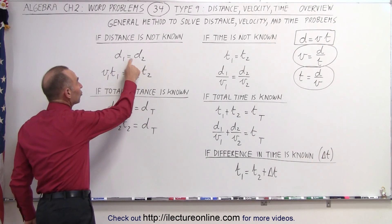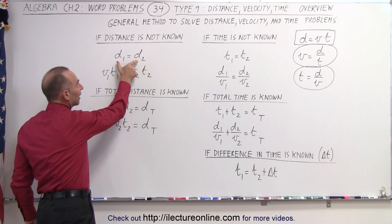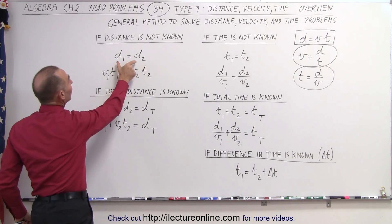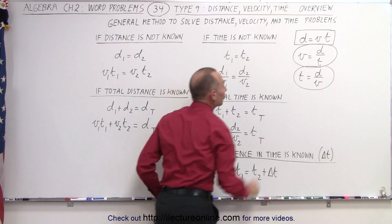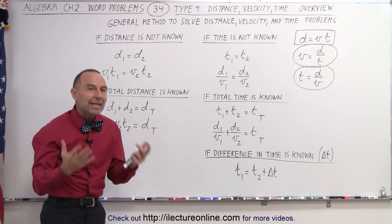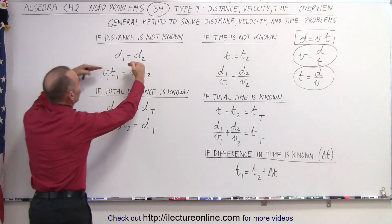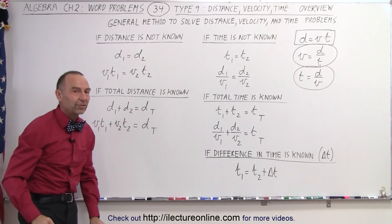And if we know that the distance traveled is the same but we don't know the distance, then we can set them equal to each other and replace distance by velocity times time. That then eliminates the need to know the distance, because now we have an equation where distance is no longer a factor.